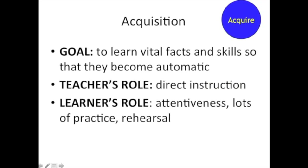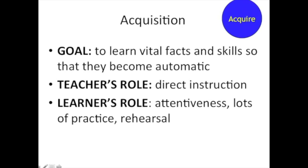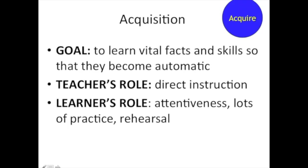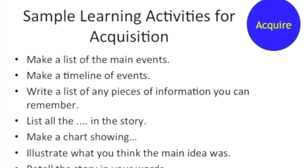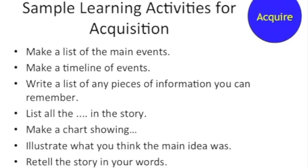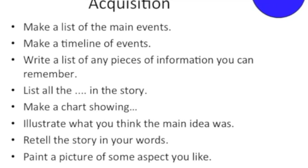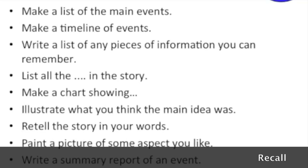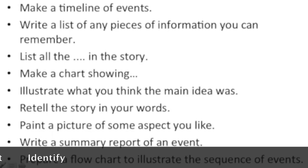Let's start with acquisition. The goal of acquisition is pretty straightforward: to have kids learn vital facts and skills so that they become automatic. The teacher's role is to directly instruct. The learner's role is one not only of listening and being attentive to what's being said, but also doing lots of practice and rehearsal, so that they're going after fluency on a regular basis. Take a look at some sample learning activities for acquisition. If you have Bloom's taxonomy running through your head, mostly it's level one of remembering, with action verbs like recall, state, select, identify.